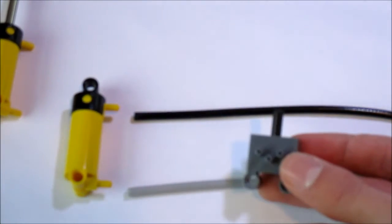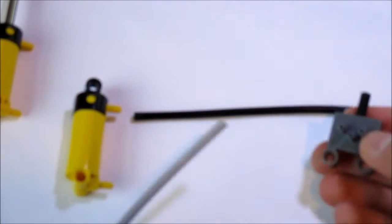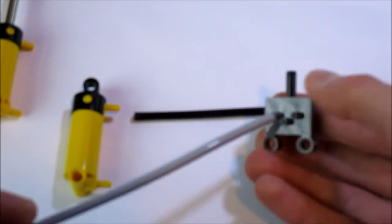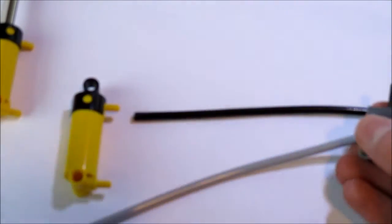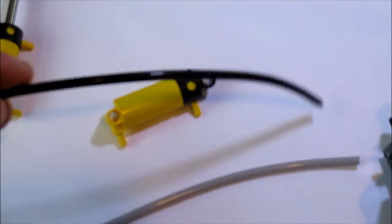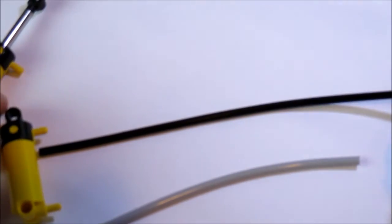These are going to be controlled by valves, as I explained in the previous video. You're going to have one output of the valve plugged into one tube, plugged into one input of the piston. Then the other output of the valve is going to be plugged into another tube, into the other input of the piston.